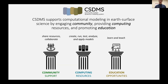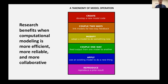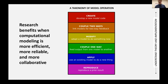CSDMS's computing-oriented activities are based in part on the notion that research can benefit when computational modeling is made more efficient, more reliable, and more collaborative. One way to view that challenge — in terms of the software that implements models and the operation of that software — is as a six-fold hierarchy of model operation tasks that range from reproduction to application all the way up to creating a model in the first place.